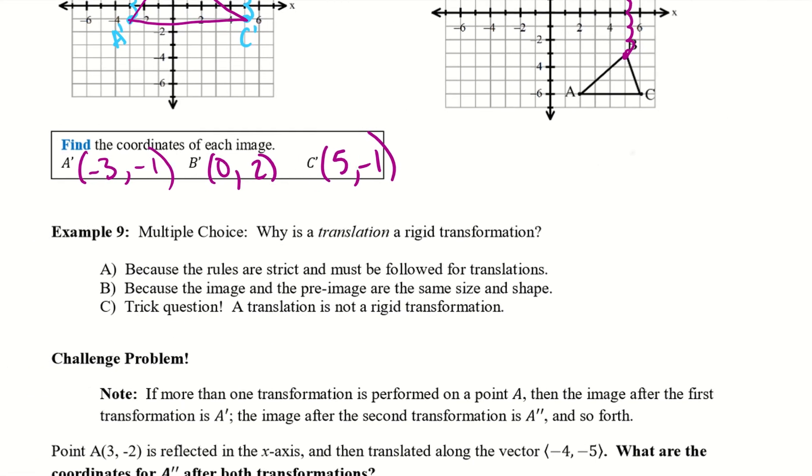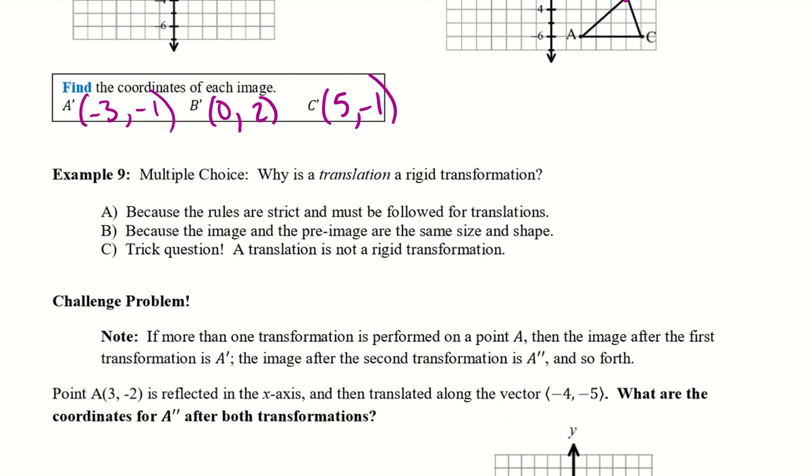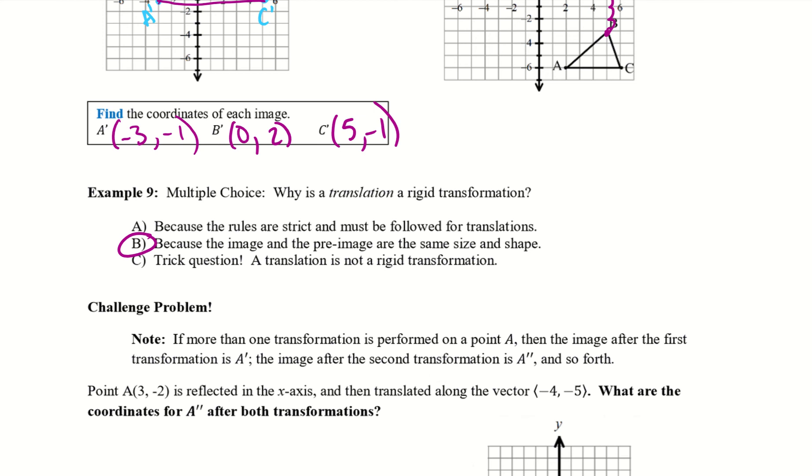Alrighty. Go ahead and try example 9. So multiple choice. Why is a translation a rigid transformation? So go ahead and take a second to think about why is it a rigid transformation? We talked about this in 3.1. So if you need to go back and check that, go for it. I'll give you a second. Alright. It is B because the image and pre-image are the same size and shape. So it makes a rigid transformation if we still have the same size and the same shape.